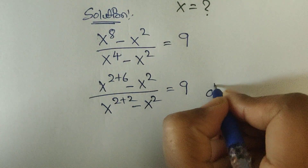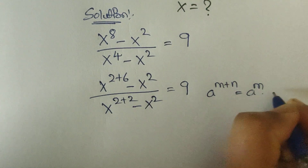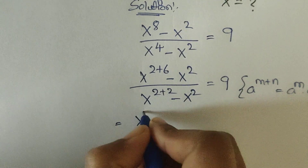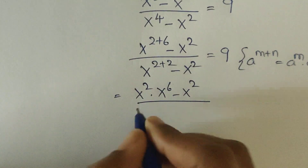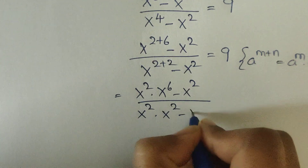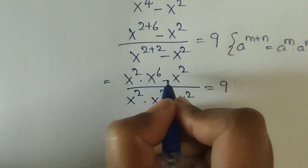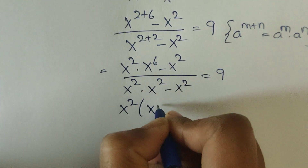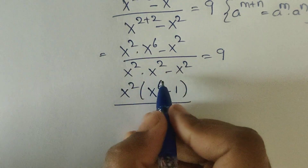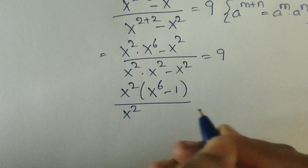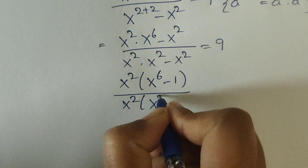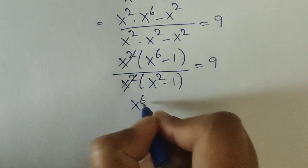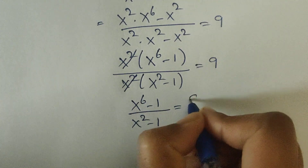Here we can apply the formula: a to the power of m plus n equals a to the power of m times a to the power of n. Using this law, we can write x squared times x to the power of 6, minus x squared, divided by x squared times x squared, minus x squared, equals 9. In the numerator we have x squared as a common factor, so taking out x squared as common, we get x to the power of 6 minus 1, divided by x squared minus 1, equals 9.